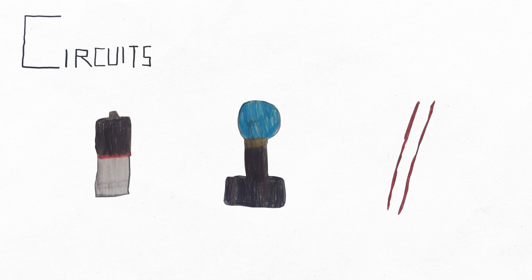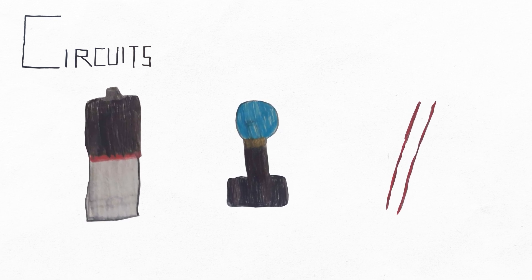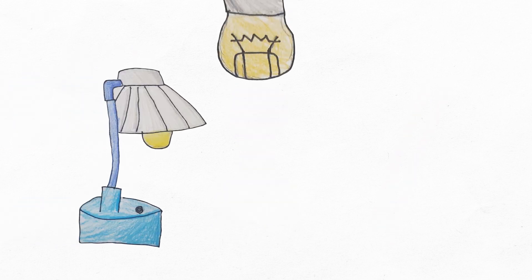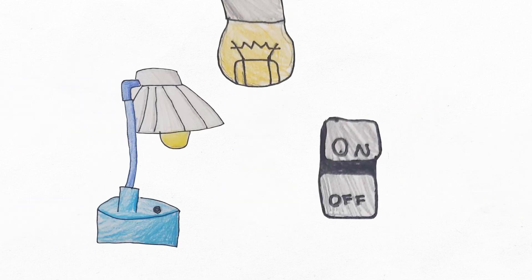To make a closed electrical circuit, you will need three different materials: a battery, a bulb, and two wires, a lamp, a switch—components of a circuit.